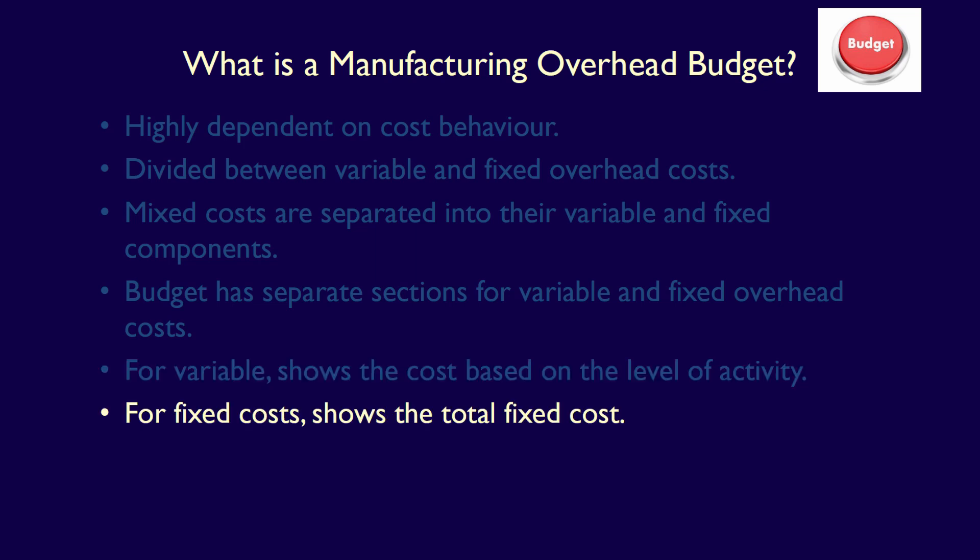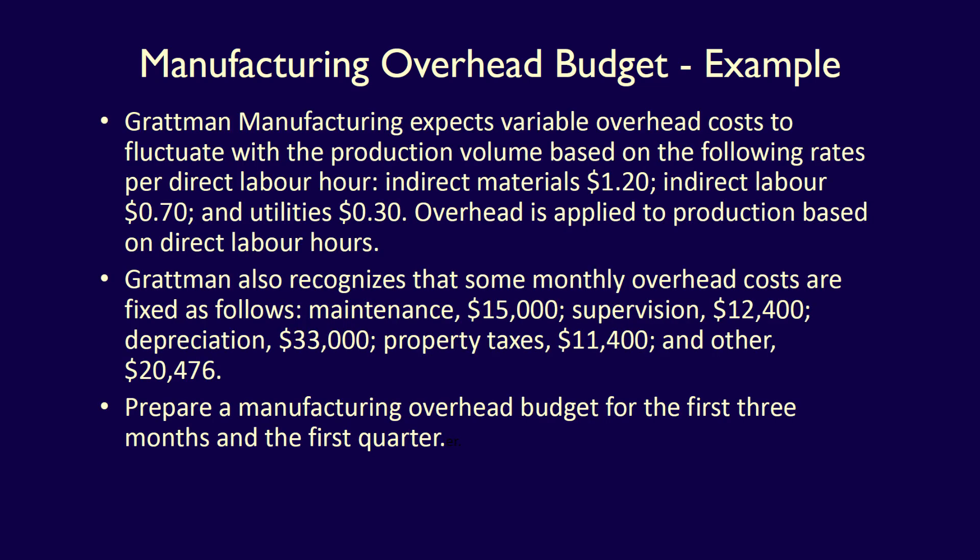Fixed costs are shown as fixed, at least within the relevant range. We are continuing with our example of Gratman Manufacturing to demonstrate the preparation of a manufacturing overhead budget. Gratman Manufacturing expects variable overhead costs to fluctuate with production volume, based on the following rates per direct labour hour: indirect materials $1.25, indirect labour $0.70, utilities $0.30. Overhead is applied to production based on direct labour hours. Gratman also recognises that some monthly overhead costs are fixed: maintenance $15,000, supervision $12,400, depreciation $33,000, property taxes $11,400, and other $20,476. Prepare a manufacturing overhead budget for the first three months and the quarter.